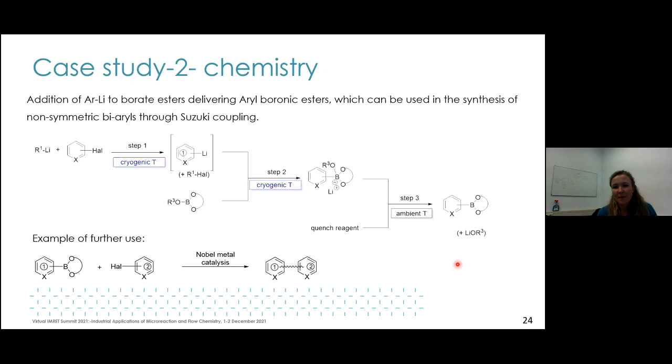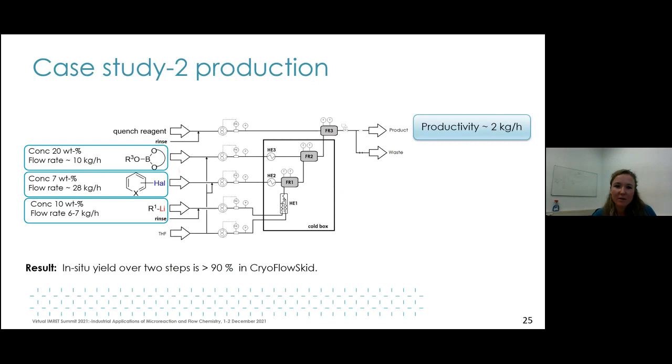In this particular case we also observed clogging just because the aryl bromide stream had 320 ppm of water. You can see how lithium hydroxide deposition takes place slowly and this is the pressure recorded in the first reactor where lithiation takes place.